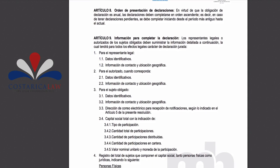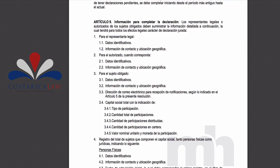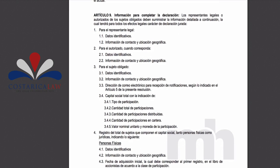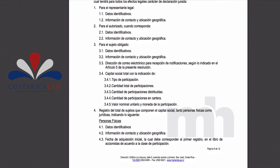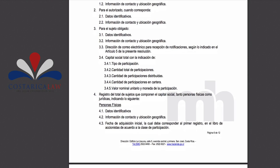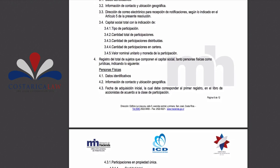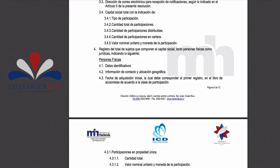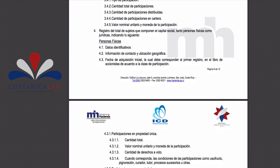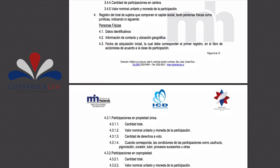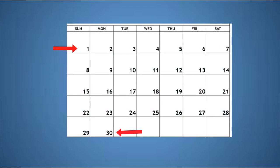They want to know the capital stock amount of the corporation, the type of stock, amount of shares held and distributed, and the registration of all shareholders that make up the totality of that capital stock. They also want to know what date that stock was purchased. As to the filing requirement, the form has to be filed every year between April 1st and April 30th of each year.